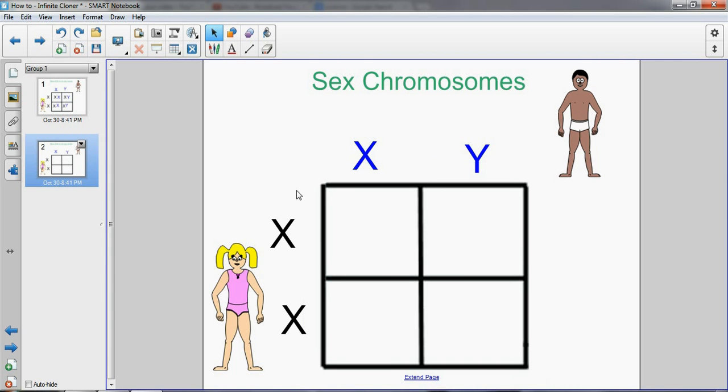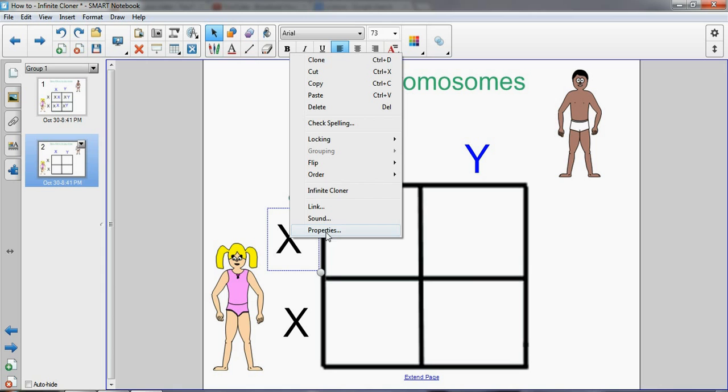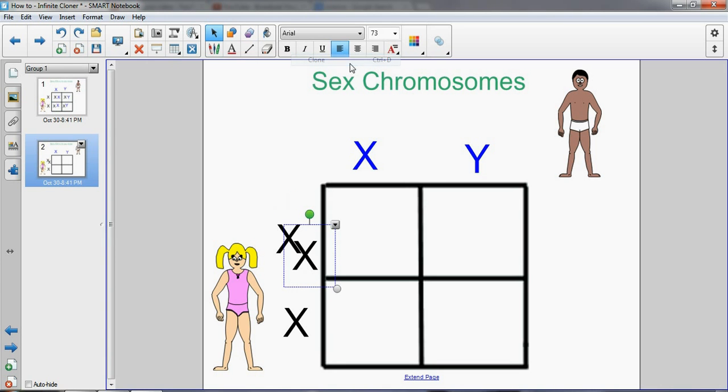Now before we clone an object, the object can be moved and nothing happens. Now if we want to create this illusion, one way we can go about doing it is right-clicking on the object, going to clone. Now the object has made a copy of itself.